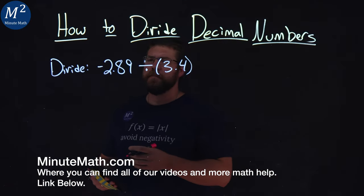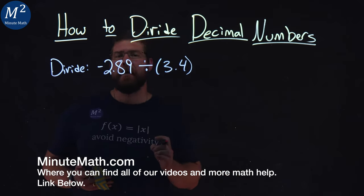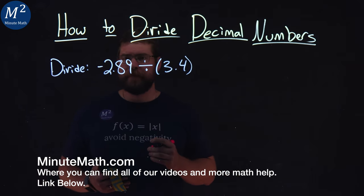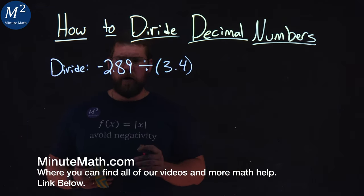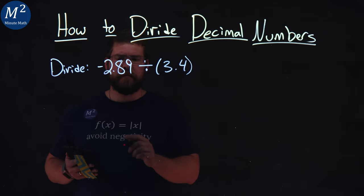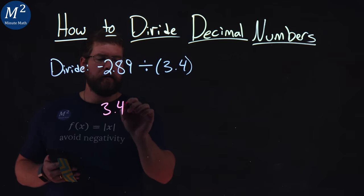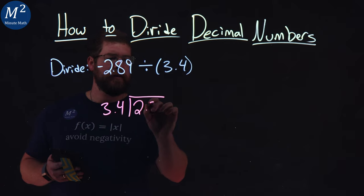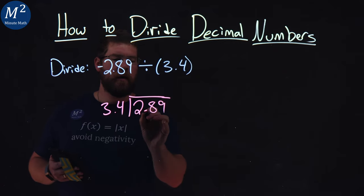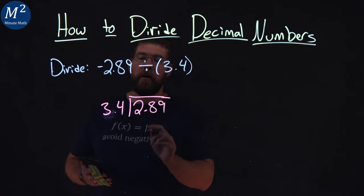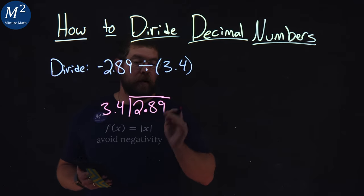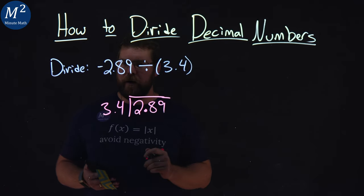We're given this problem right here, divide negative 2.89 divided by 3.4. So normally if I set this up with long division, I'd have 3.4 right here goes into 2.89. I'm going to leave off the negative sign here, but I know a negative divided by a positive is going to be negative, so we've got to keep that in mind.